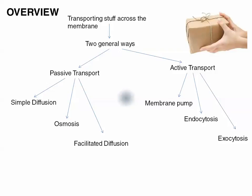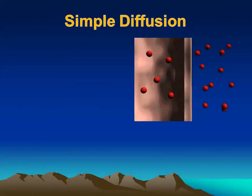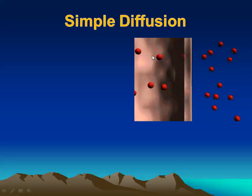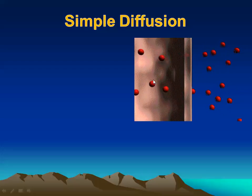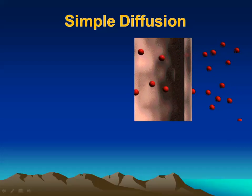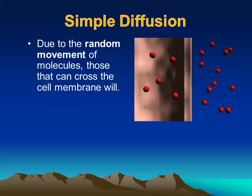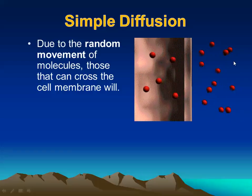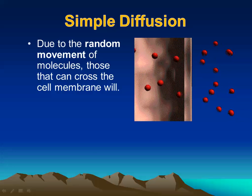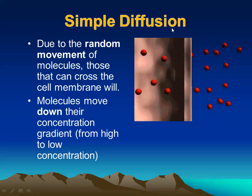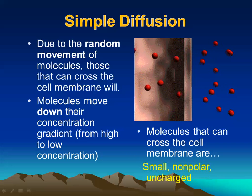Simple diffusion is really simple — you have molecules at high concentration on one side and low concentration on the other. It's called 'simple' because the molecules are small enough to diffuse directly through the phospholipids without requiring any protein channel. Through the random movement of molecules, those that can cross the cell membrane will, reaching a dynamic equilibrium — two-way traffic, but net movement goes down the concentration gradient.